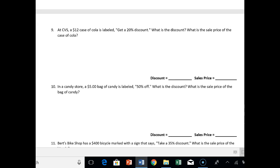Number nine, at CVS, a 12 case of cola is labeled get a 20% discount. What is the discount? What is the sale price? So the discount, basically, you're asking yourself, what is 20% of 12? So that's 12 times 0.20. So here you're just doing this math to find what the discount is worth altogether, and that's $2.40. So let's write that down there.